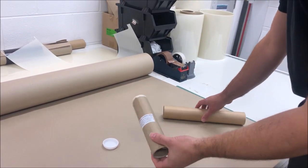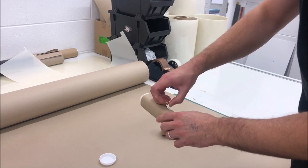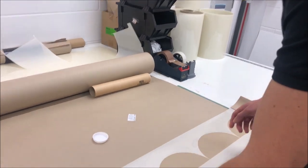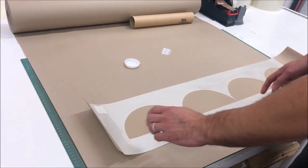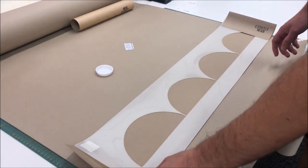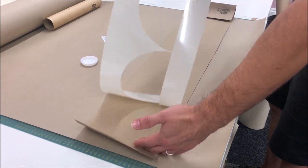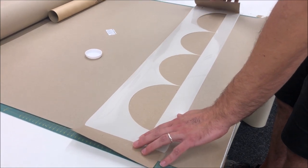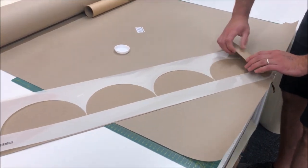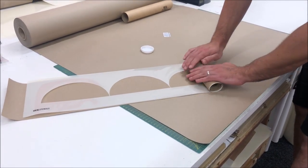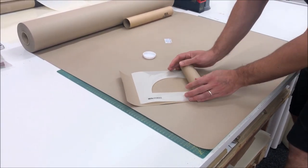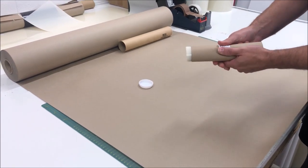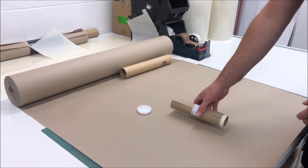When you receive your stencil, it will come in a tube and will be rolled up. Sometimes, if the stencil has been in the tube for a long time in transit, you'll find it slightly curled when you open it, which might make it not lie perfectly flat to the wall. If that's an issue, just flip the stencil over the opposite way and roll it back up against the curl. Secure it with a little bit of tape again, and if you leave it overnight, that should be enough to tease out the curl on your stencil.